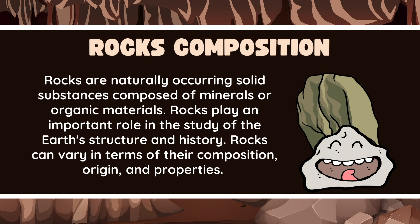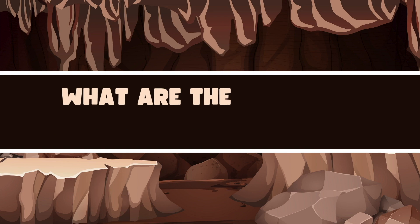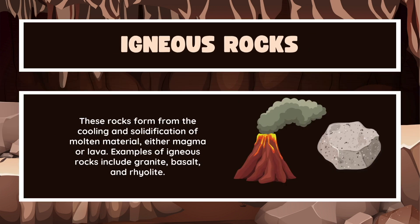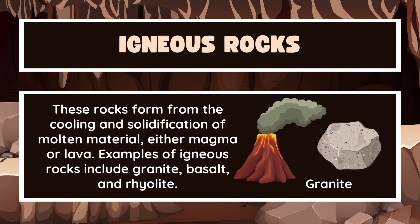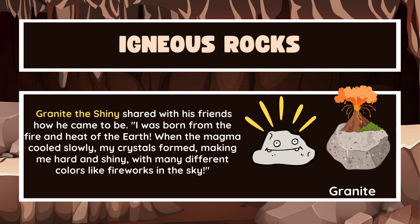What are the different types of rocks? Igneous rocks: these rocks form from the cooling and solidification of molten materials, either magma or lava. Examples of igneous rocks include granite, basalt, and rhyolite.